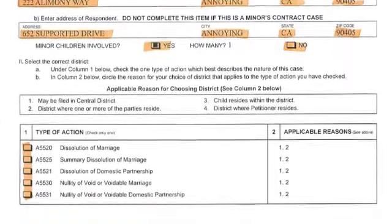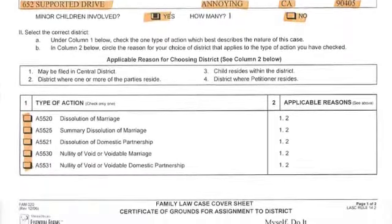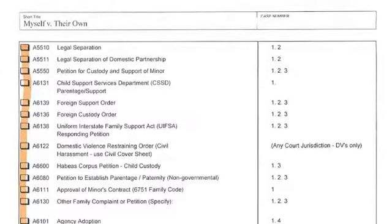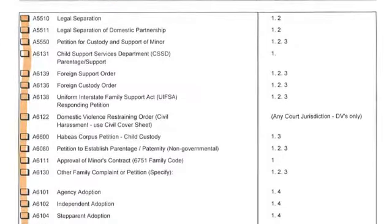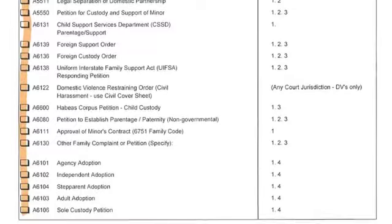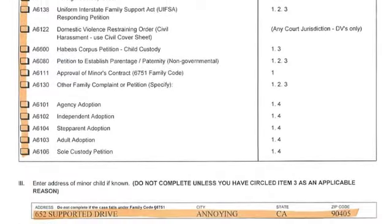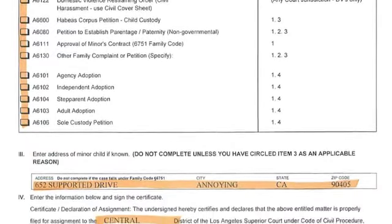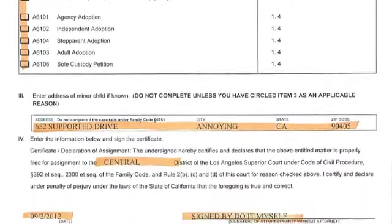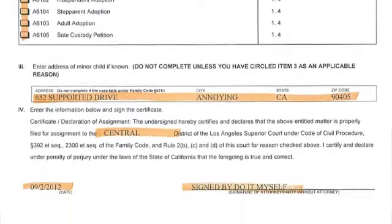The highlighted portions that you're seeing here are all the various pieces of information that must be filled out so that the court can determine what has to happen with this case. These are the choices that you as a petitioner will be making.